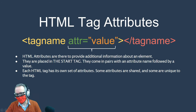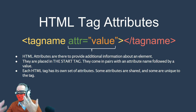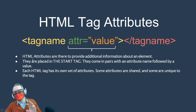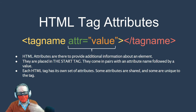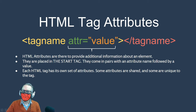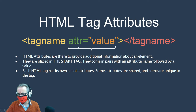Attributes provide additional information about an element, like a character trait. For example, a person's attribute might be 'eyes' and the value would be 'blue.' Or the attribute could be 'height' and the value '5 foot 11.' That's how you think about attributes and values — they're always in the start tag, never in the end tag.